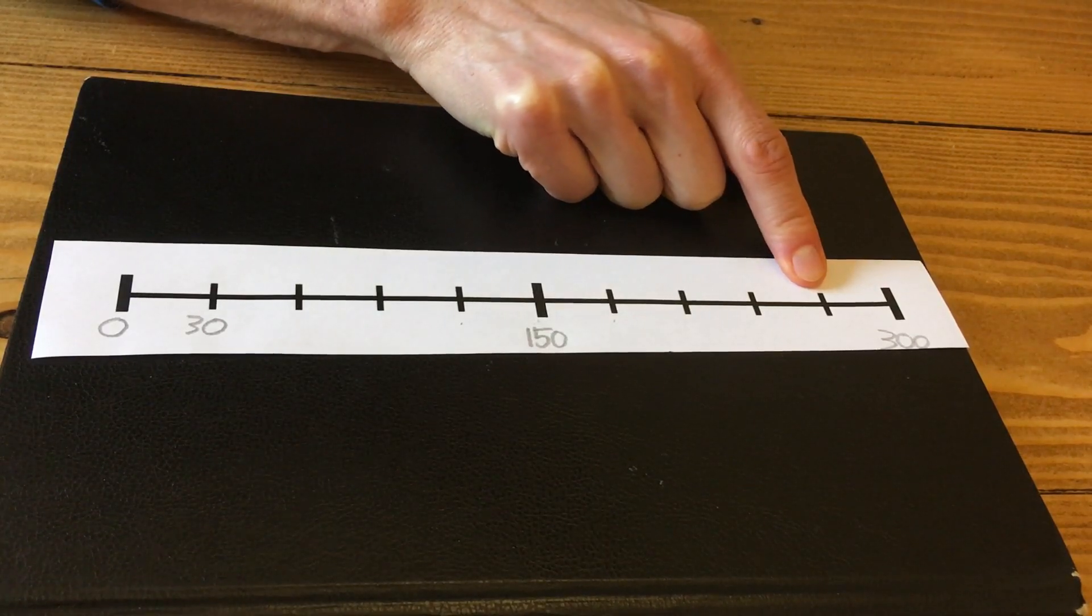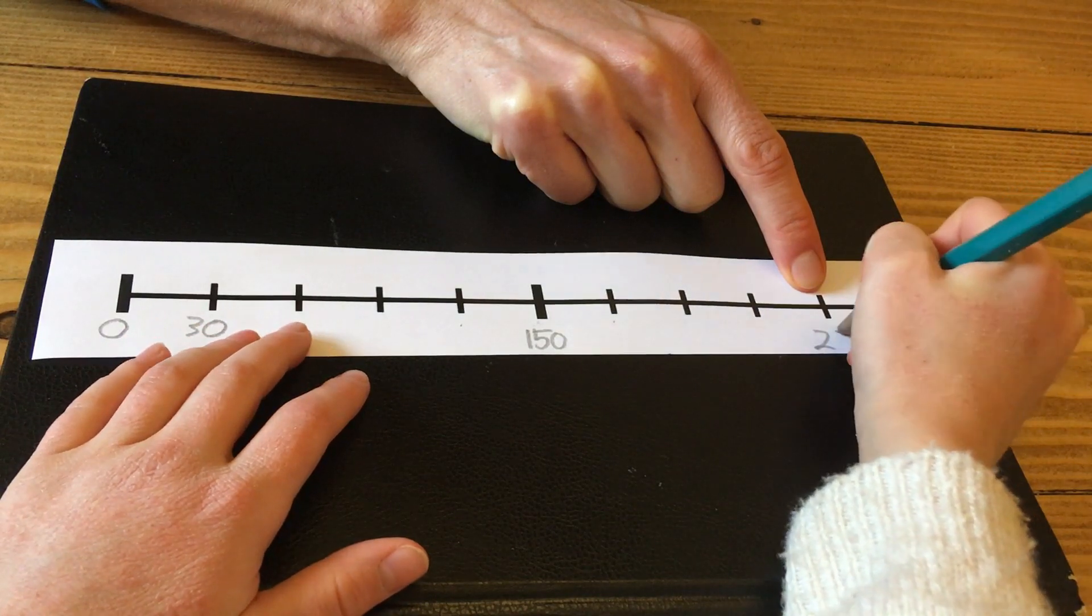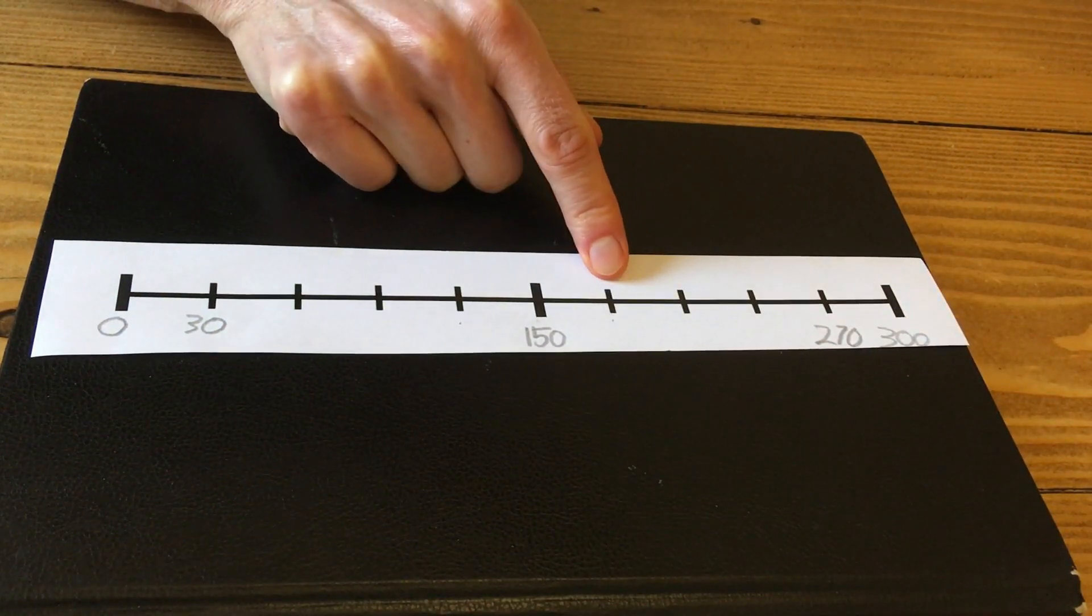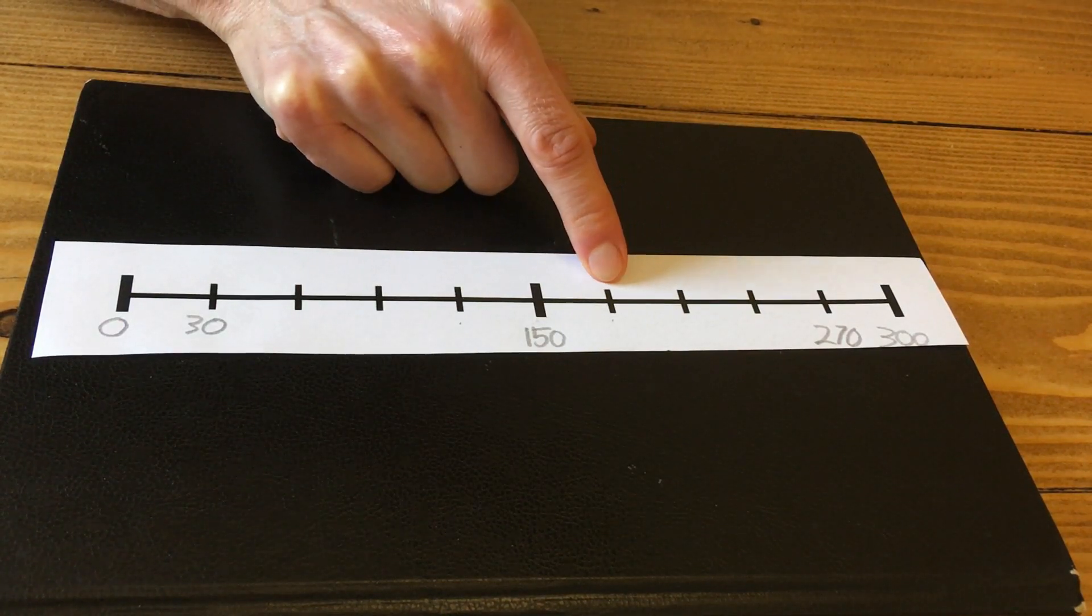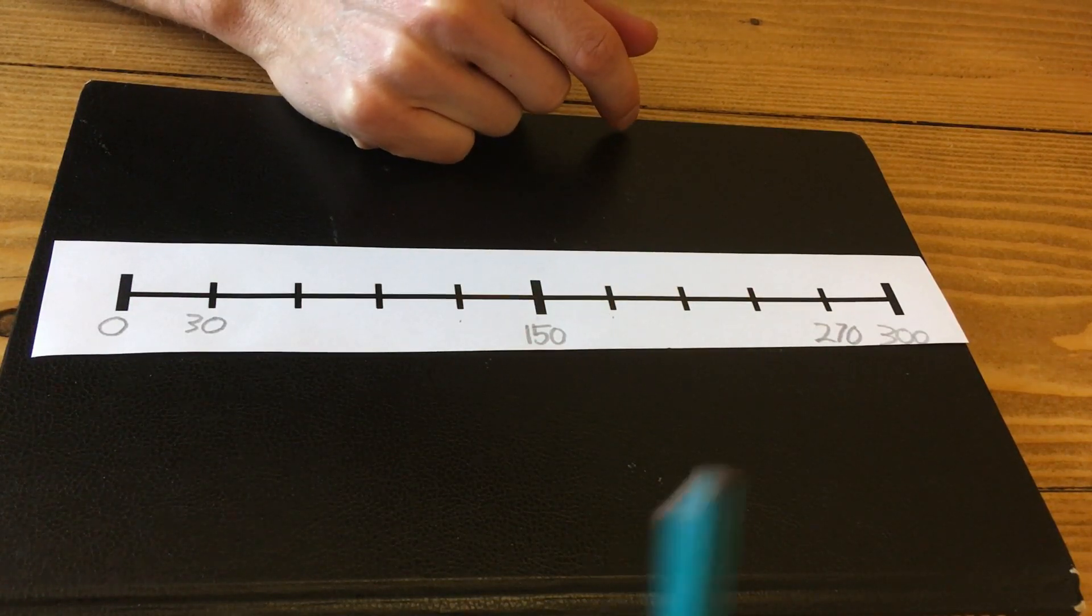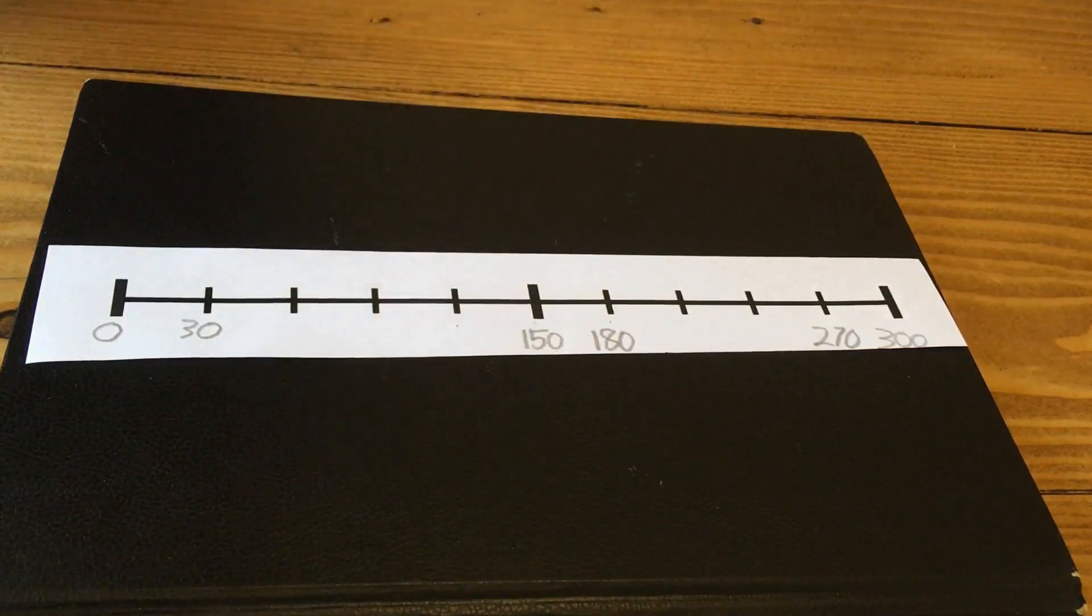And this one? That is two hundred and seventy. And let's go for how many lots of thirty? Six lots of thirty. Six lots of thirty is? Six lots of thirty is one hundred and eighty. And so on.